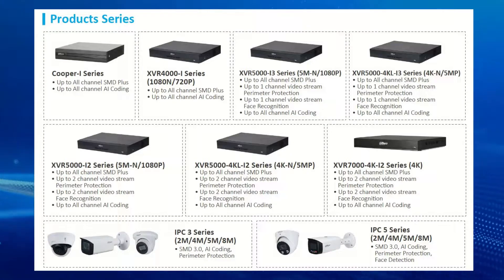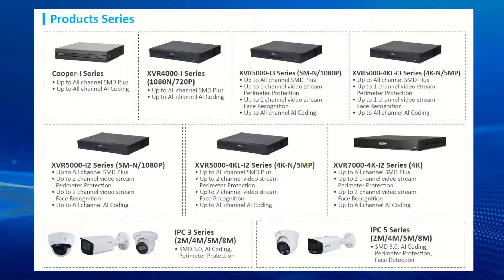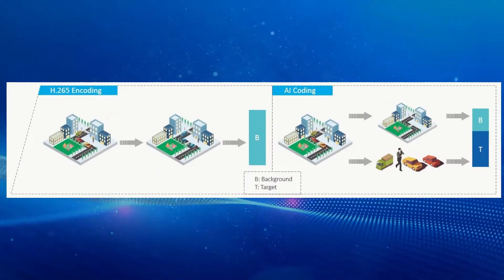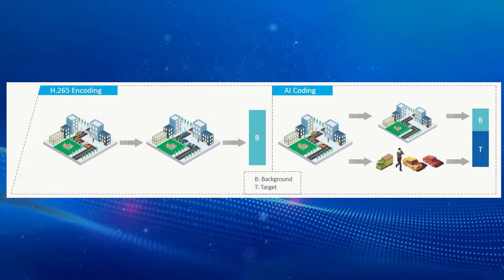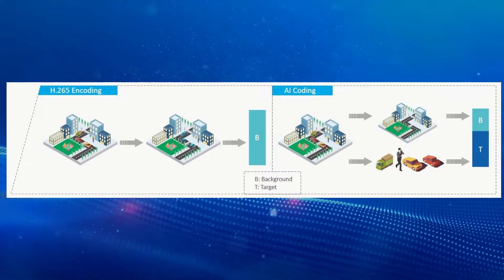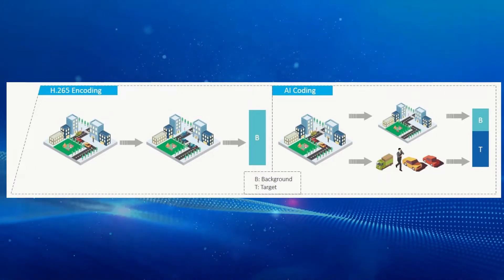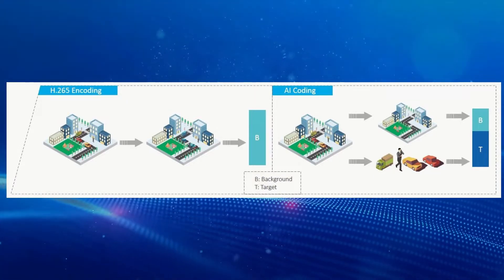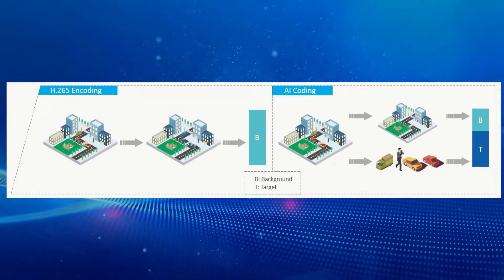What AI coding does is look at the object and figure out if it's a human or a vehicle. If it is a human or vehicle, it gives a bit more detail and better picture quality for that object. Even when the object is moving, the system tries to figure out which direction it's going and always provide enough bandwidth for that exact object.